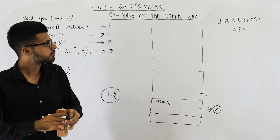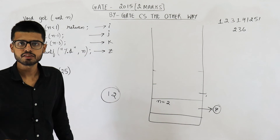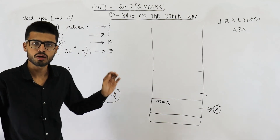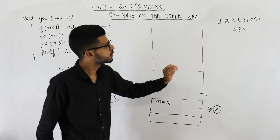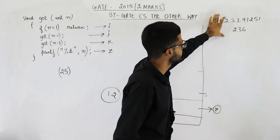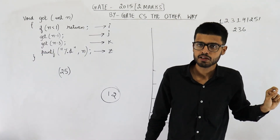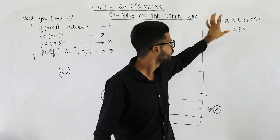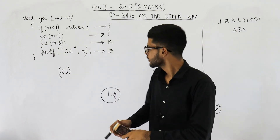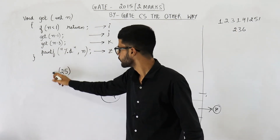And you can see if you call this function for value 6, this is the output, and the total number of function calls made for value 6 is 25. We have already seen that in the tree.